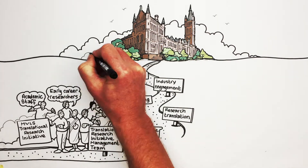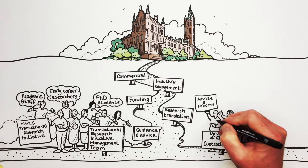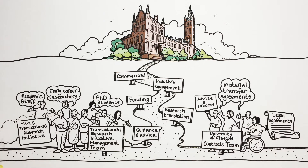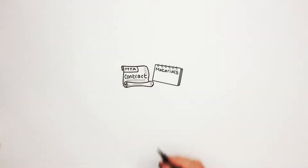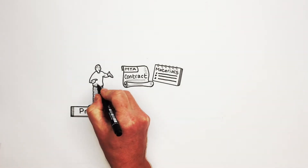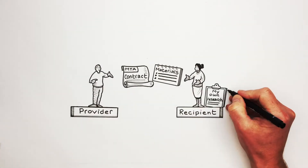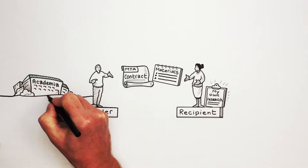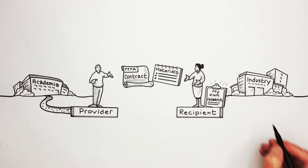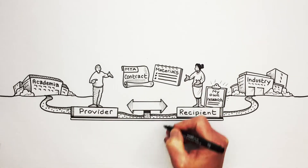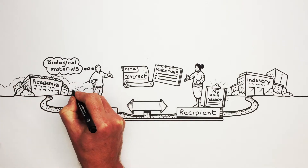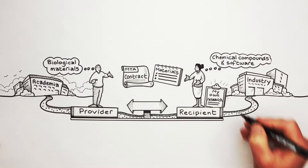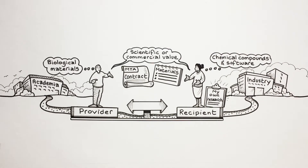Our colleagues in the University of Glasgow Contracts team help advise and process a variety of legal agreements, including material transfer agreements, or MTAs. MTAs are contracts that govern the transfer of materials from a provider to a recipient who intends to use it for their own research purposes, i.e. non-commercial use. This could be from academia to industry or another institute and vice versa. This agreement typically covers biological materials such as reagents, cell lines and plasmids, but can also be used for chemical compounds and software, or anything else with scientific or commercial value, all of which come under the term materials.